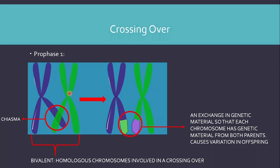Homologous pairs of chromosomes involved in crossing over are called bivalents. Crossing over allows for variation in offspring because it transfers genetic material from the maternal chromosome to the paternal chromosome and vice versa — some paternal genetic information is now on the maternal chromosome and some maternal genetic information is now on the paternal chromosome. This allows for genetic variation in the offspring.